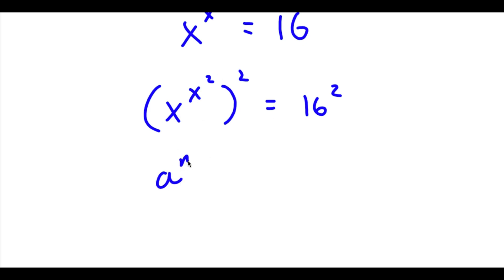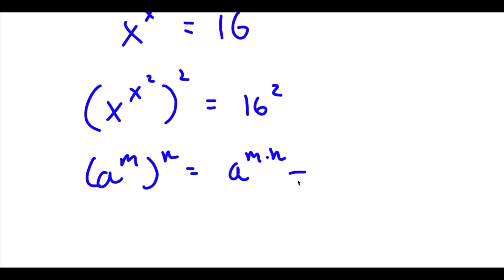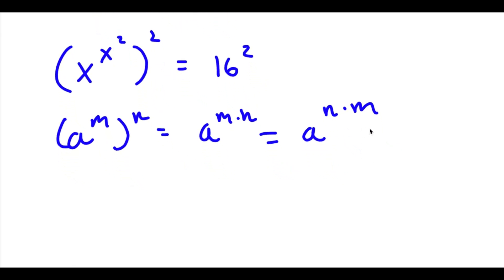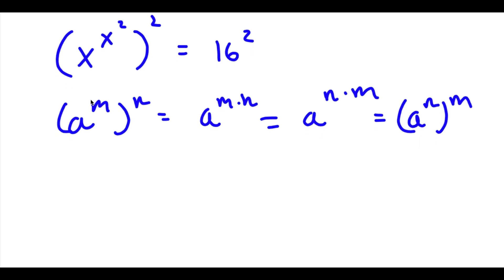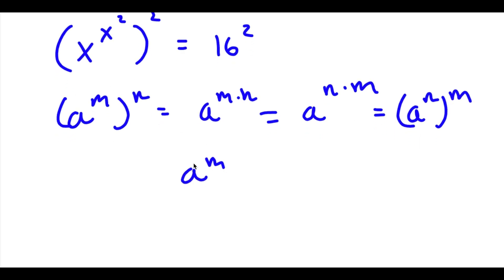Now if I have something in the form a to the power of m to the power of n, this equals a to the power of m times n. And since m times n is interchangeable, we can also rewrite a to the power of n times m as a to the power of n to the power of m. So this means that a to the power of m to the power of n is equal to a to the power of n to the power of m.